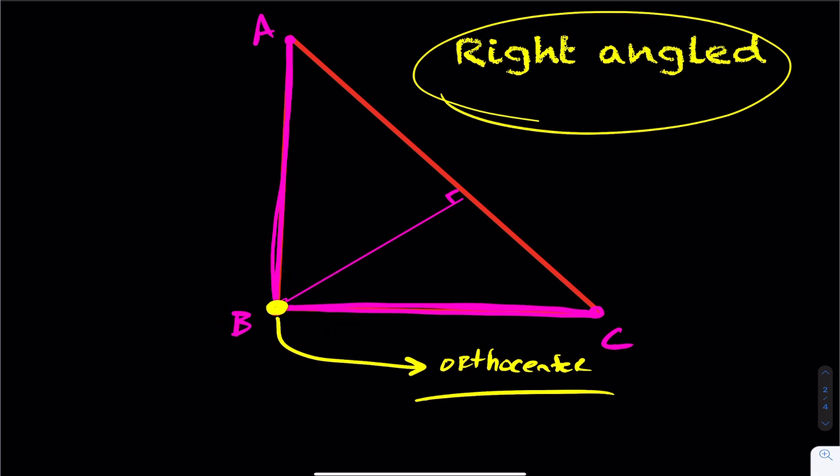To summarize orthocenter locations: acute triangles have the orthocenter inside, obtuse triangles have it outside, and right-angled triangles have the orthocenter located right at the 90-degree angle.